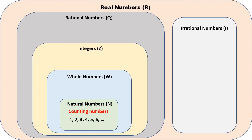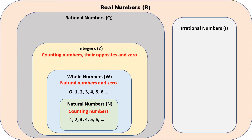Whole numbers, or W, consist of natural numbers and zero — we just add zero. Next, integers, or Z, consist of counting numbers, their opposites, and zero. Examples: negative four, negative three, negative two, negative one, zero, positive one, positive two, positive three, positive four, and so on — we can extend the negative numbers further.